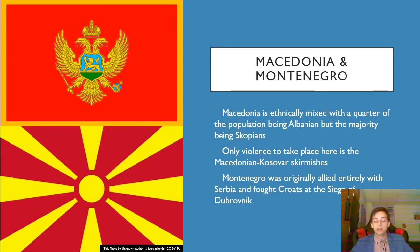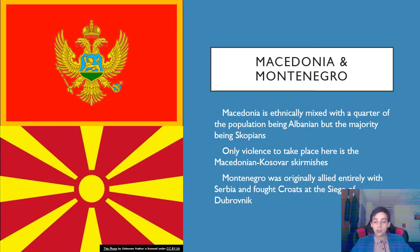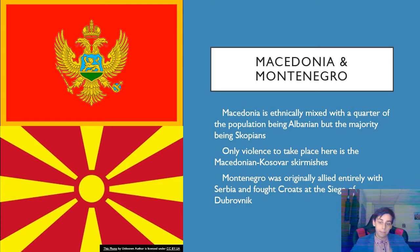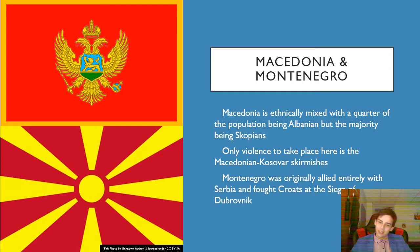Macedonia and Montenegro are not major contributors to the conflict. Montenegrins did participate in the siege of Dubrovnik with the Serbs against the Croats, but this was largely the extent of their participation. They then voted for a referendum of independence from what remained of Yugoslavia, which basically alienated them from Serbia.